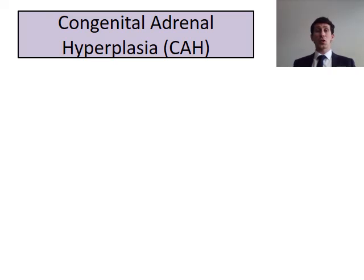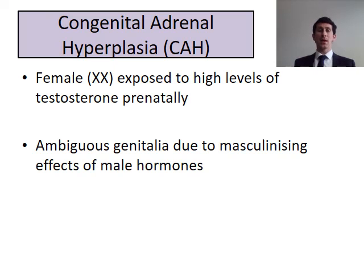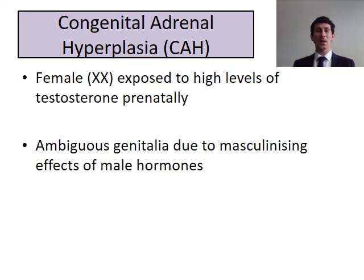In females, you can get a condition called congenital adrenal hyperplasia, or CAH. CAH occurs when a genetically female (XX) individual is exposed to really high levels of testosterone prenatally. What happens is they start to develop ambiguous genitalia — due to the masculinizing effects of that male hormone. So genetically XX females in the womb experience high levels of testosterone, and that testosterone causes them to develop ambiguous genitalia.